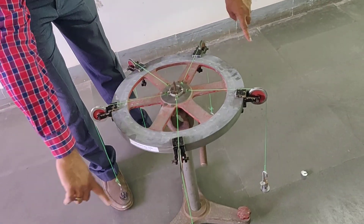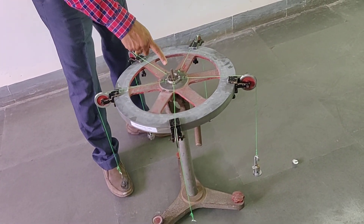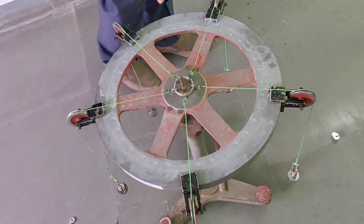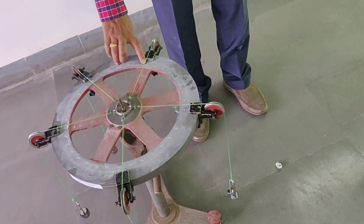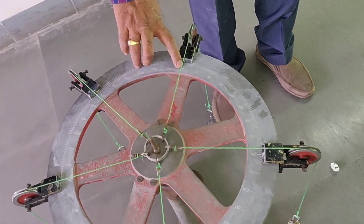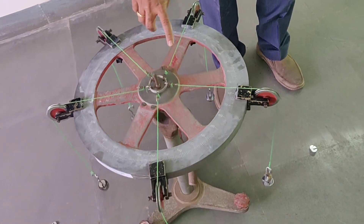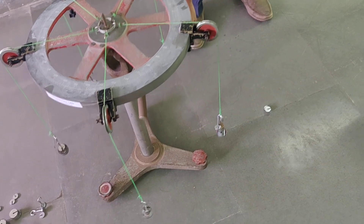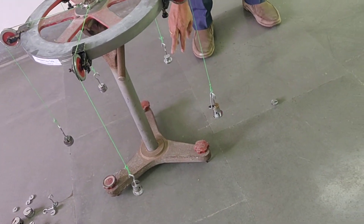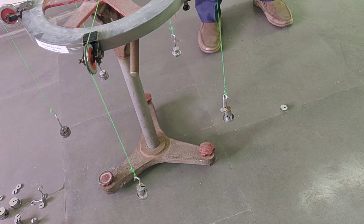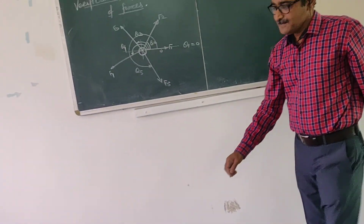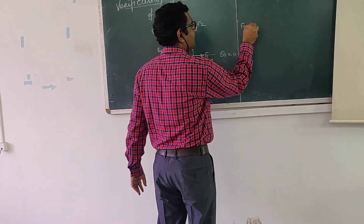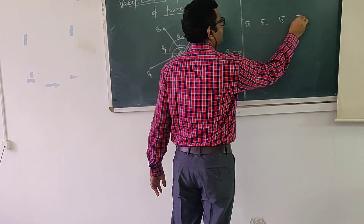You can observe that we have adjusted the weight such that the ring is exactly at the center — it is not touching this pivot. Let this force be F1 which is at 0 degree. The weight applied for F1 is 50 plus 25 plus 25, so F1 force is 100 grams at theta 1 = 0 degree. F2 is applied at an angle of theta 2 = 79 degree.